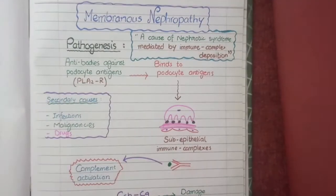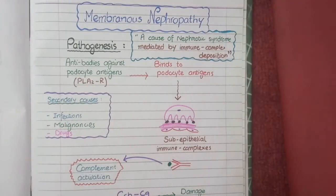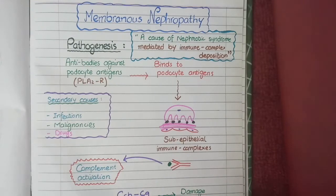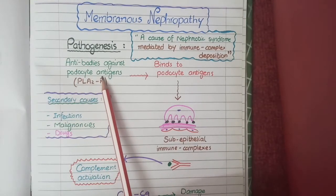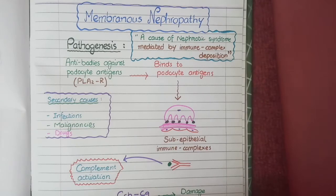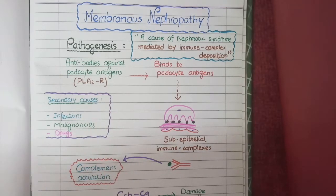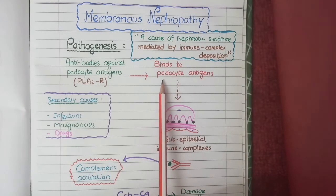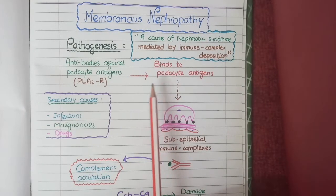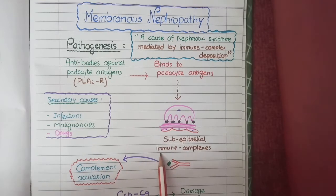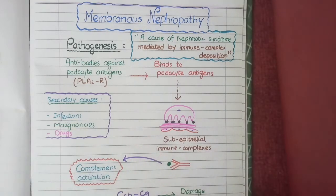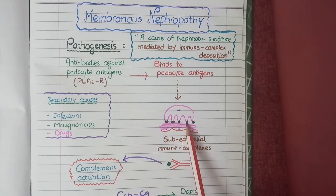Membranous nephropathy is an autoimmune disorder in which our immune system develops antibodies against antigens on podocytes. The most common of these podocyte antigens are PLA2 receptors, that is phospholipase A2 receptors. The body develops autoantibodies against these antigens, and the antibodies result in formation of immune complexes at a sub-epithelial location, because the antibodies are formed against the antigens of podocytes.